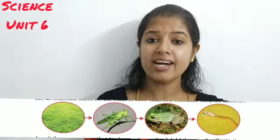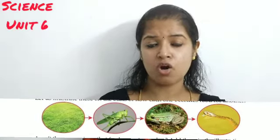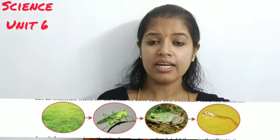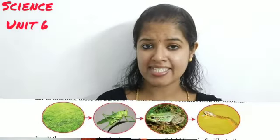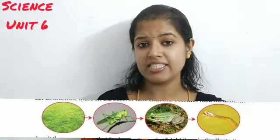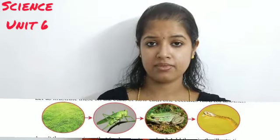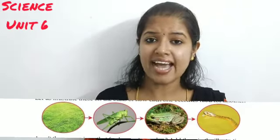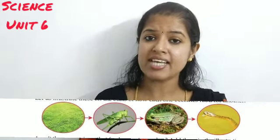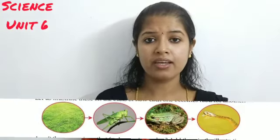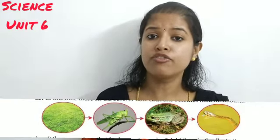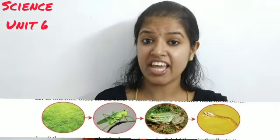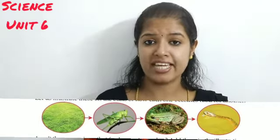This food also forms a chain. For example, grass can be eaten by a grasshopper, grasshopper by a frog, frog can be eaten by a snake, and snake can be eaten by an eagle. You can see that an organism eats another organism, and one organism becomes the food for another — as a chain. So this is called a food chain.